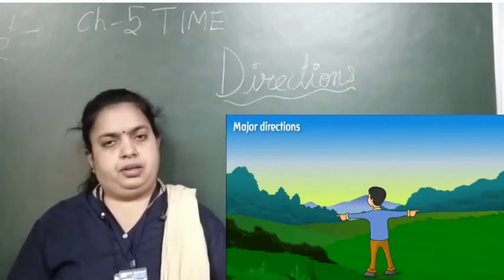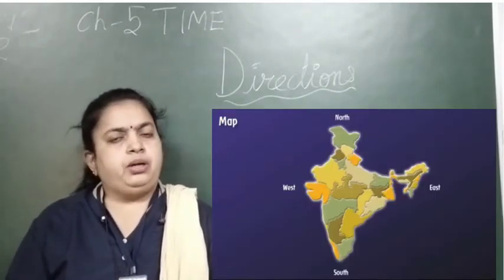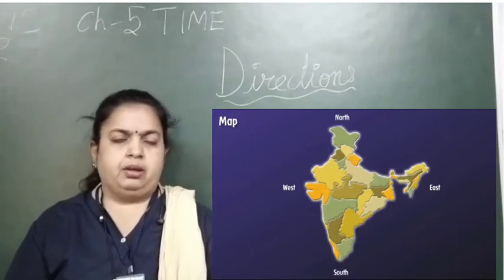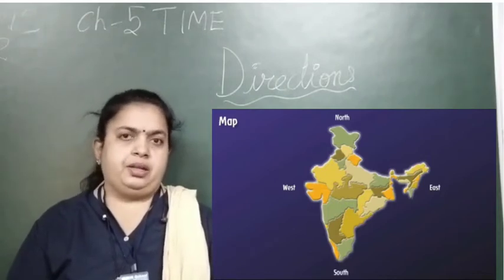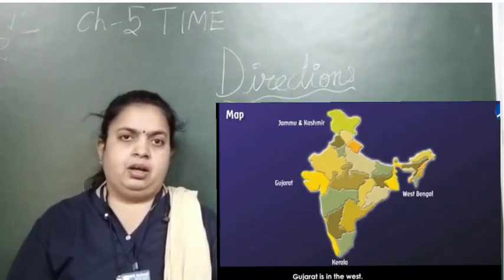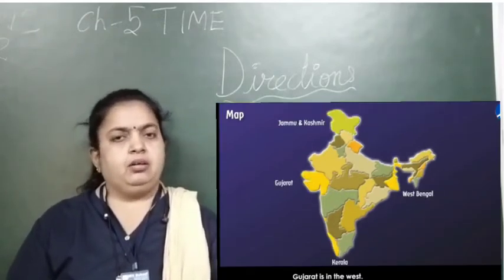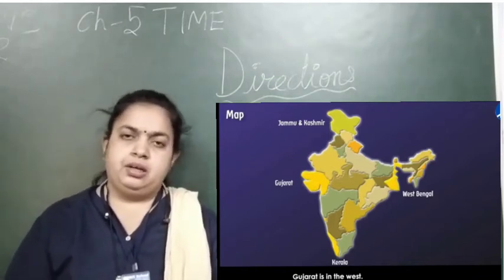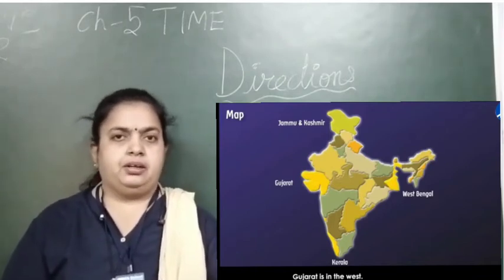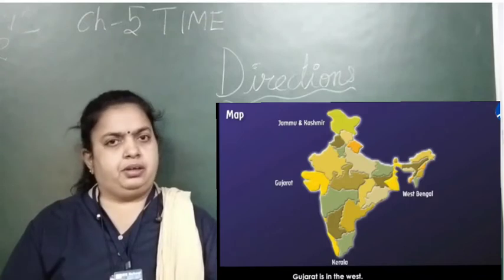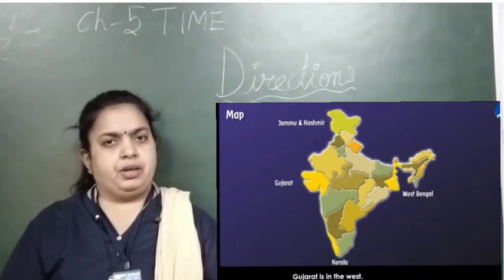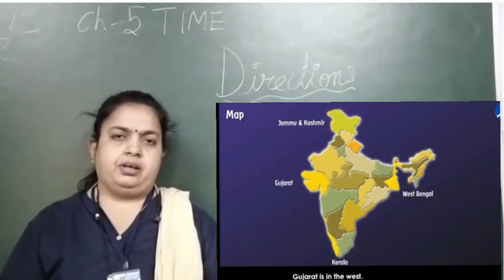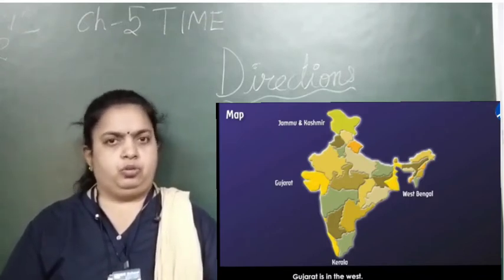And the right hand side is the north, and the left hand side is the south, as you can see. Coming to India's map, you can see on the northern side it is Jammu and Kashmir, on the southern side it is Kerala, on the eastern side it is West Bengal, and to the west it is Gujarat.